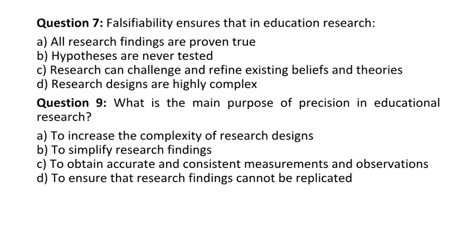Question 9: What is the main purpose of precision in educational research? A. To increase the complexity of research designs. B. To simplify research findings. C. To obtain accurate and consistent measurements and observations. D. To ensure that research findings cannot be replicated. Correct answer is C: to obtain accurate and consistent measurements and observations.